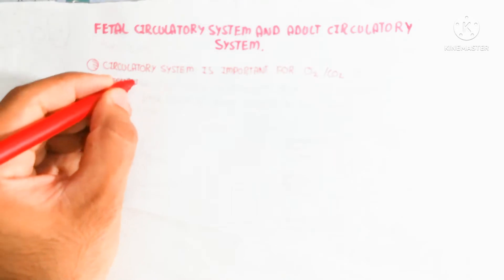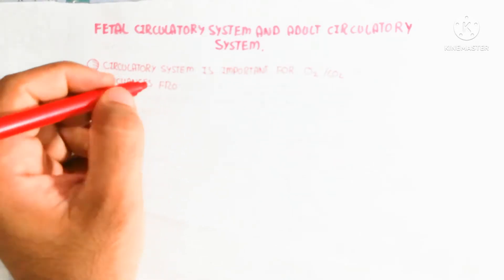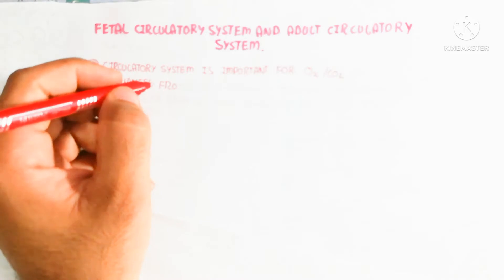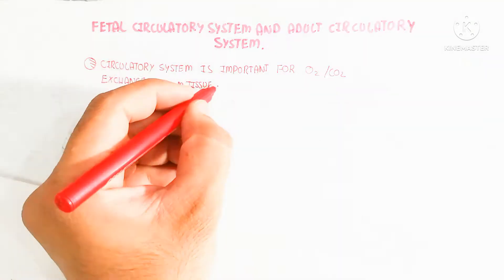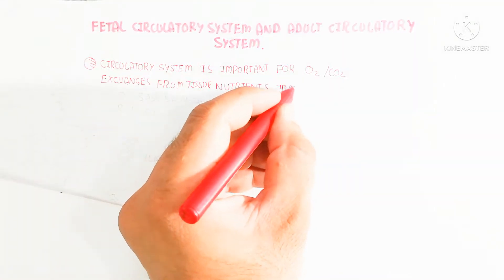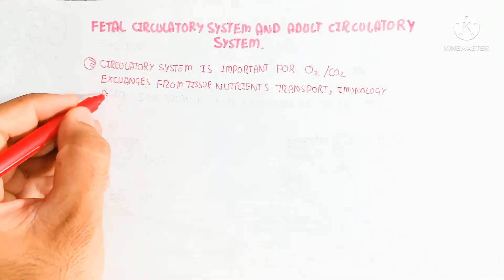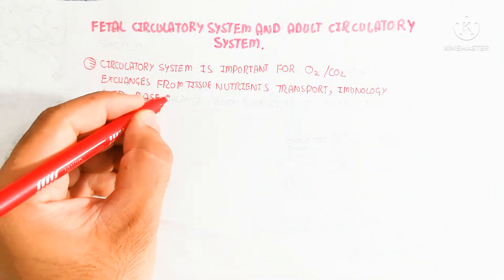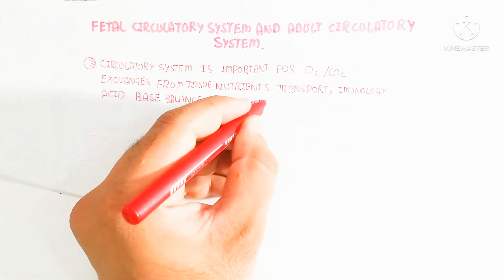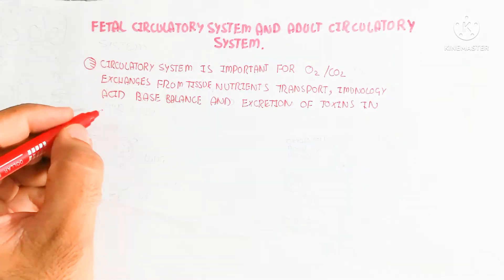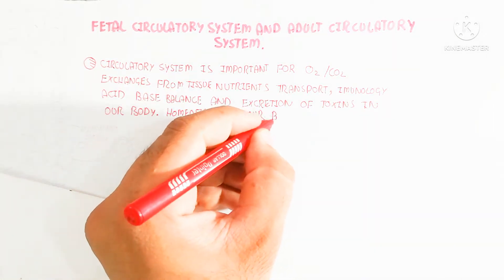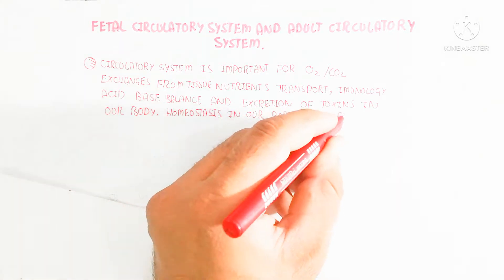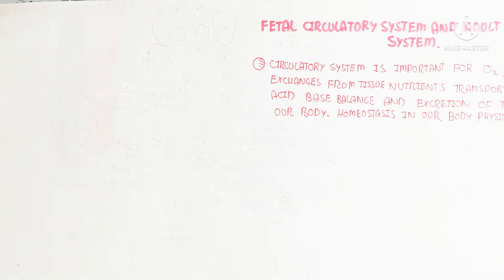The circulatory system is important for oxygen and carbon dioxide exchange from the tissue, nutrient transport, immunology, acid-base balance, and excretion of toxins in our body. It maintains homeostasis — for example, water balance and acid-base balance. That is why the circulatory system is present in all animals throughout the mammals, birds, and every advanced animal.